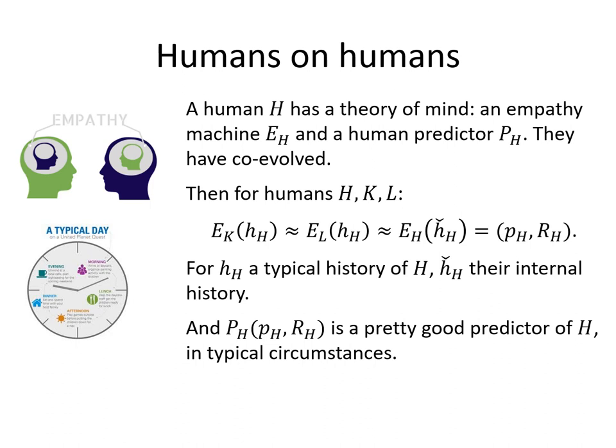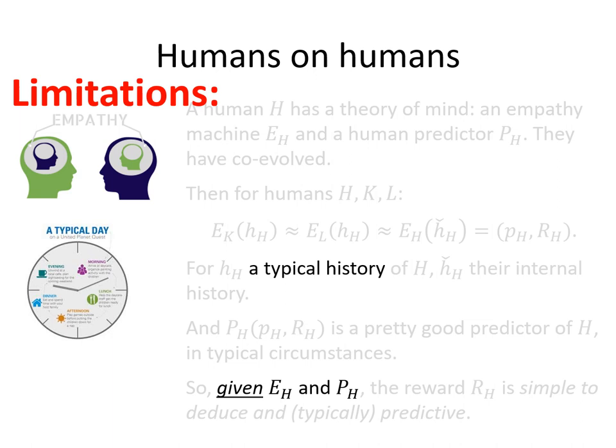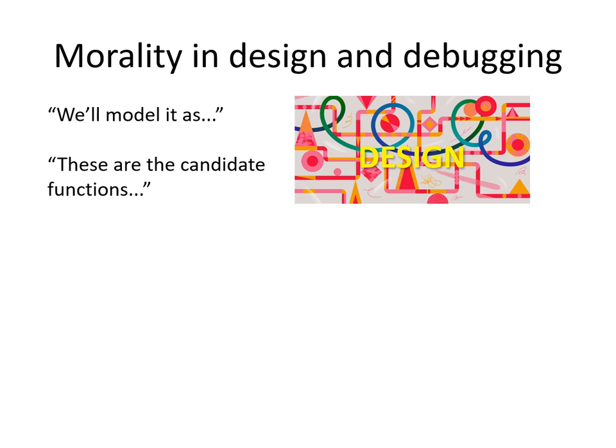What's also the case is that our own internal theory of mind, when we apply it to ourselves, is quite similar to other humans' theory of mind about us — not identical, but very similar in terms of agents in possible mind space. Once we have the planner and reward function that comes from these empathy modules and we apply the predictor to it, it's a pretty good predictor. So given the empathy module and the predictor, the reward is simple to deduce and typically predictive. The limitation is that it only applies in typical circumstances.